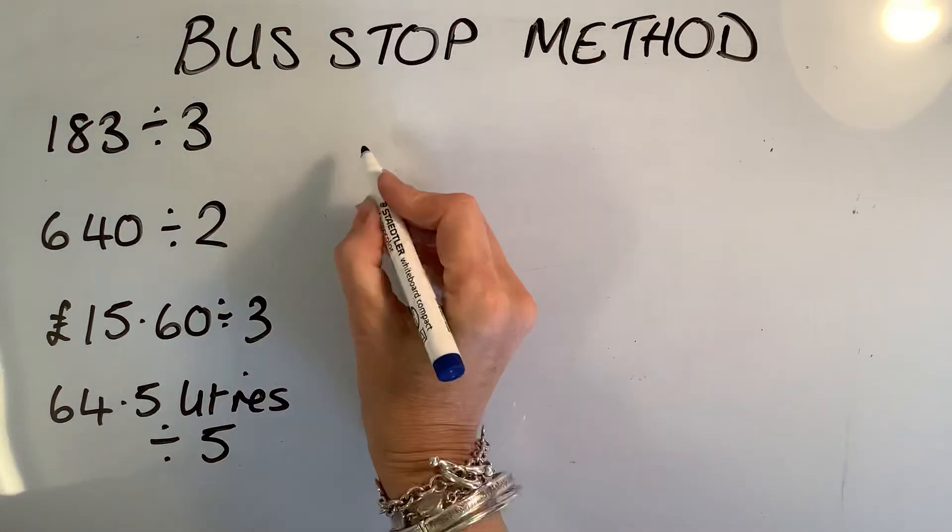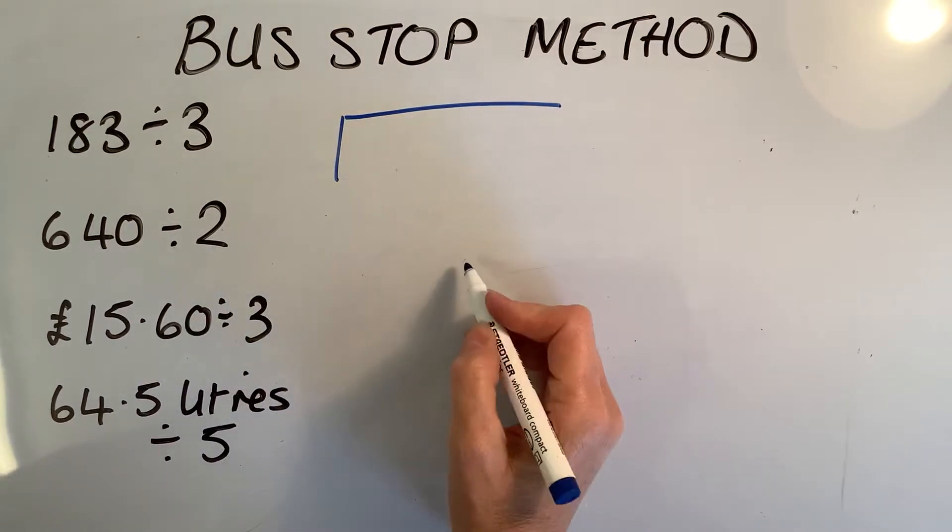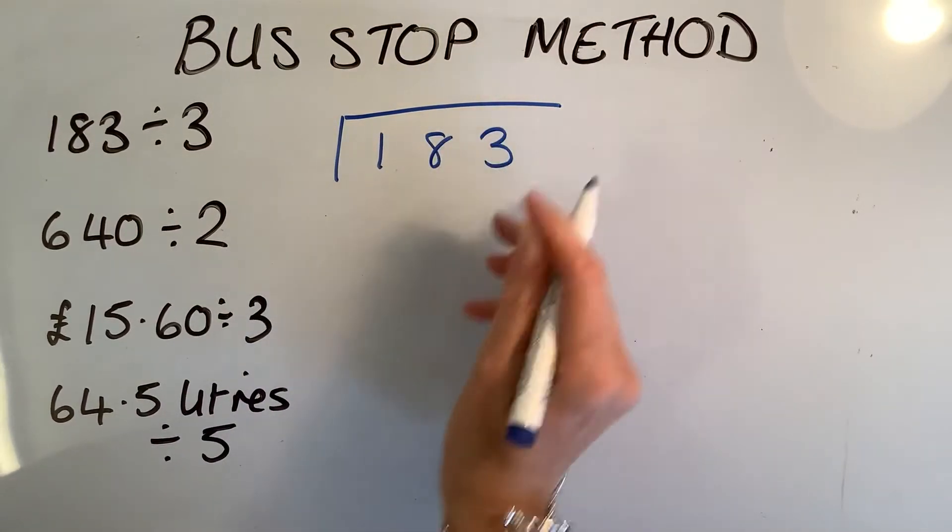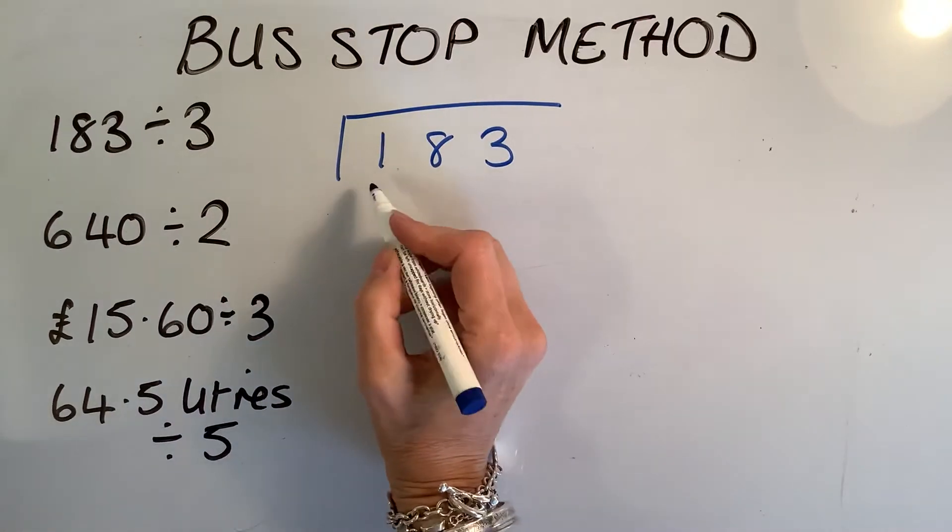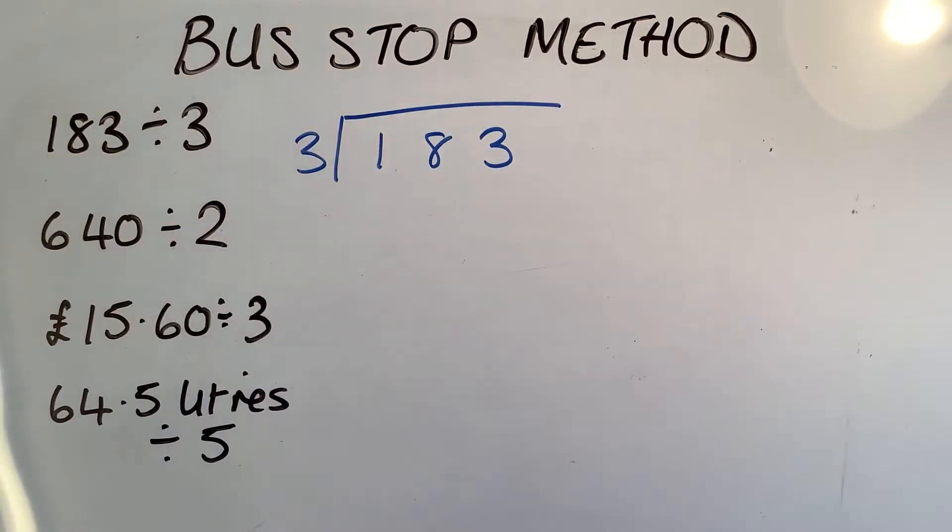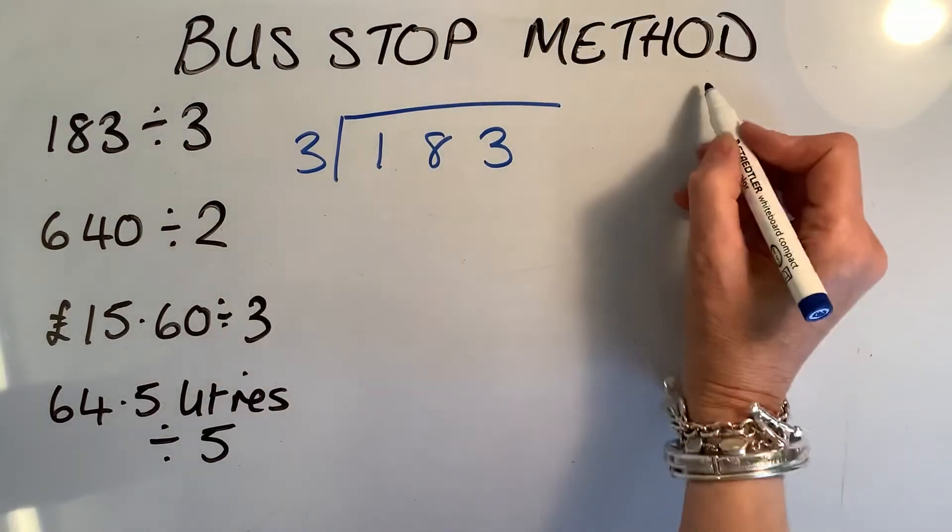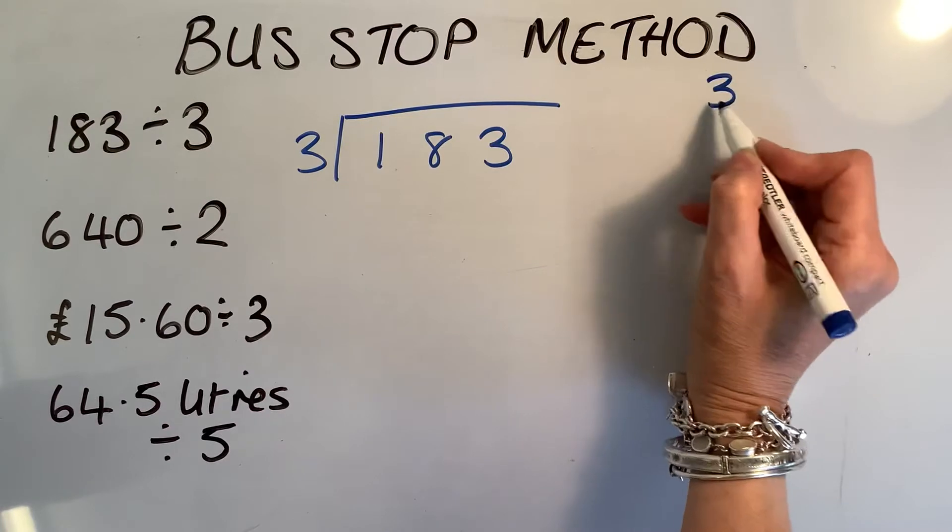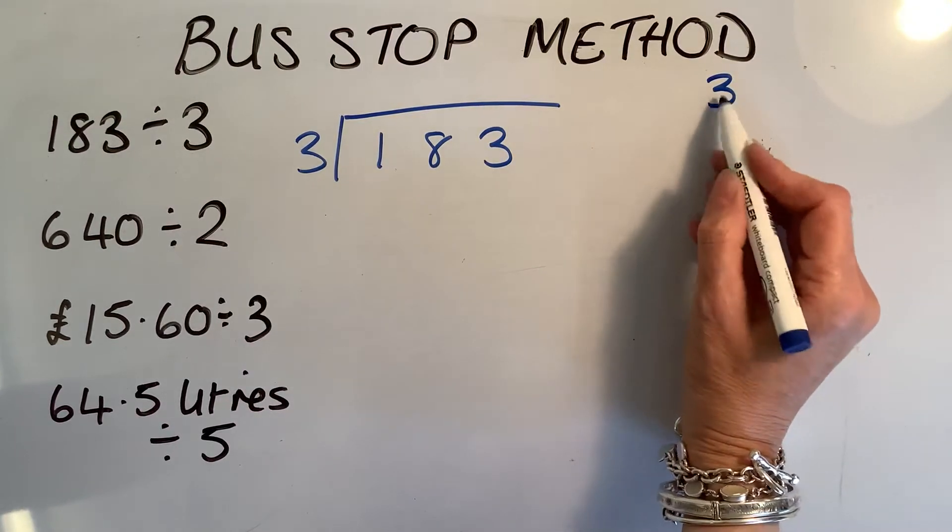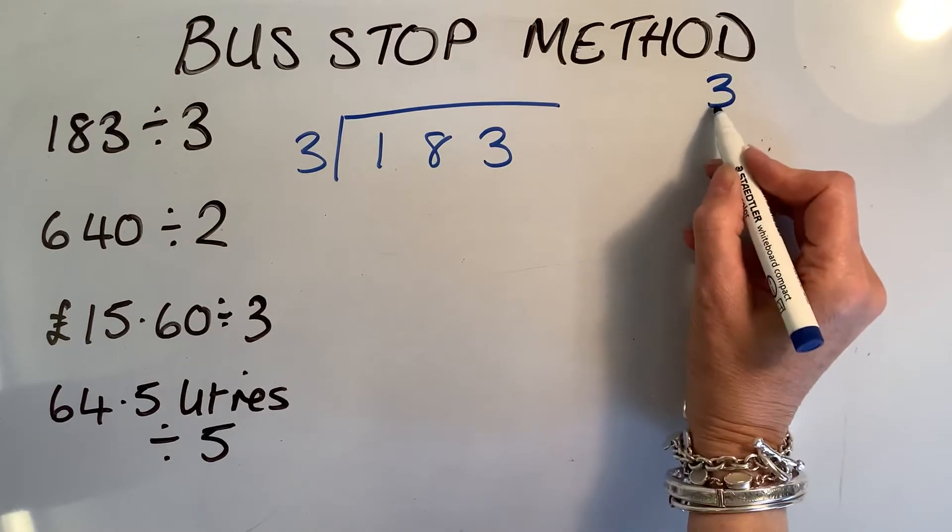183 divided by 3. So I draw a slightly crooked bus stop, put 183 inside. Notice I spread it out - don't do it tiny, it won't work. We're going to divide it by 3. First step: do I remember the 3 times table? I do, but you might not. So I'd encourage you, if you think you're going to get stuck, write your 3 times table down the side.